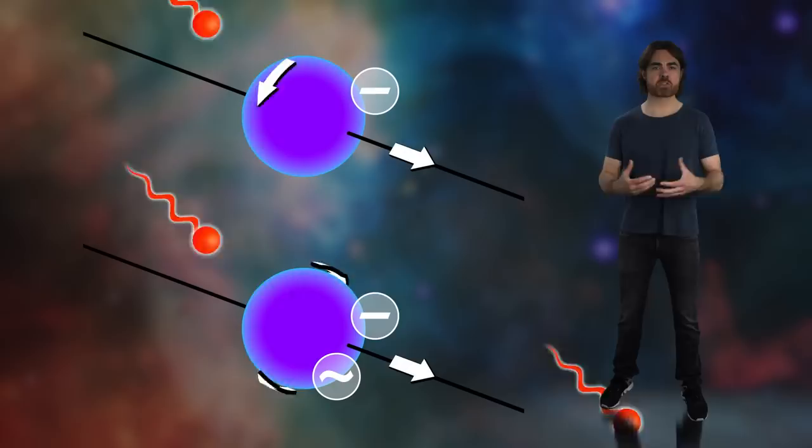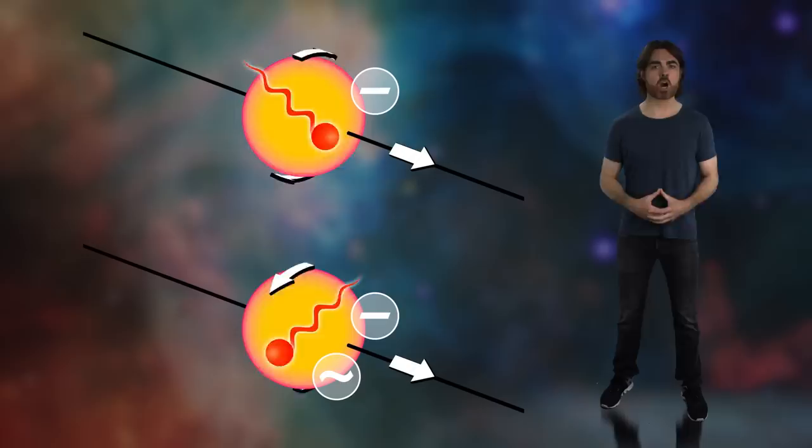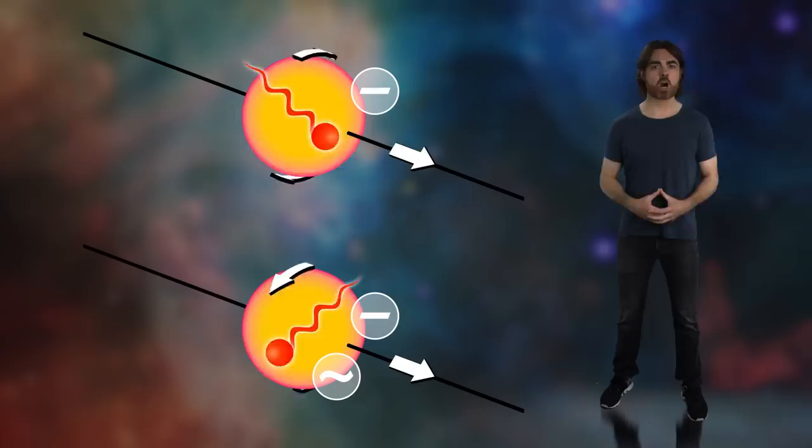Chirality determines whether a particle can interact with the weak nuclear force. The left chiral electron feels this force, and the right chiral electron does not. This interaction is flipped for antimatter. The right chiral antielectron feels the weak force, while the left chiral antielectron does not.